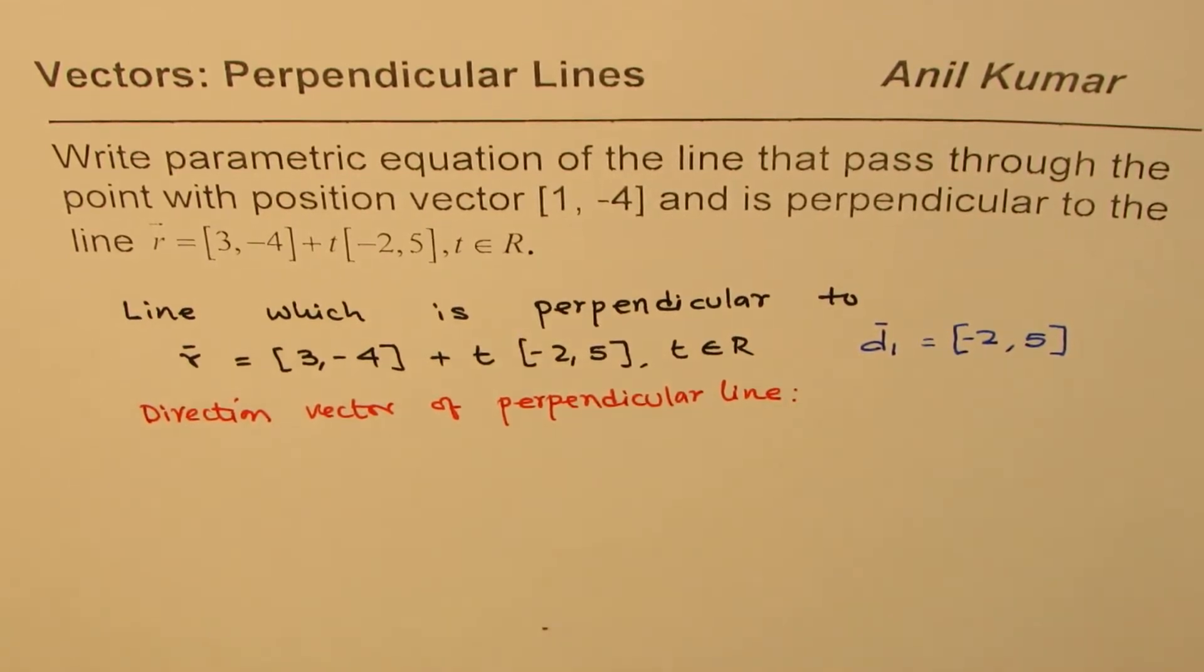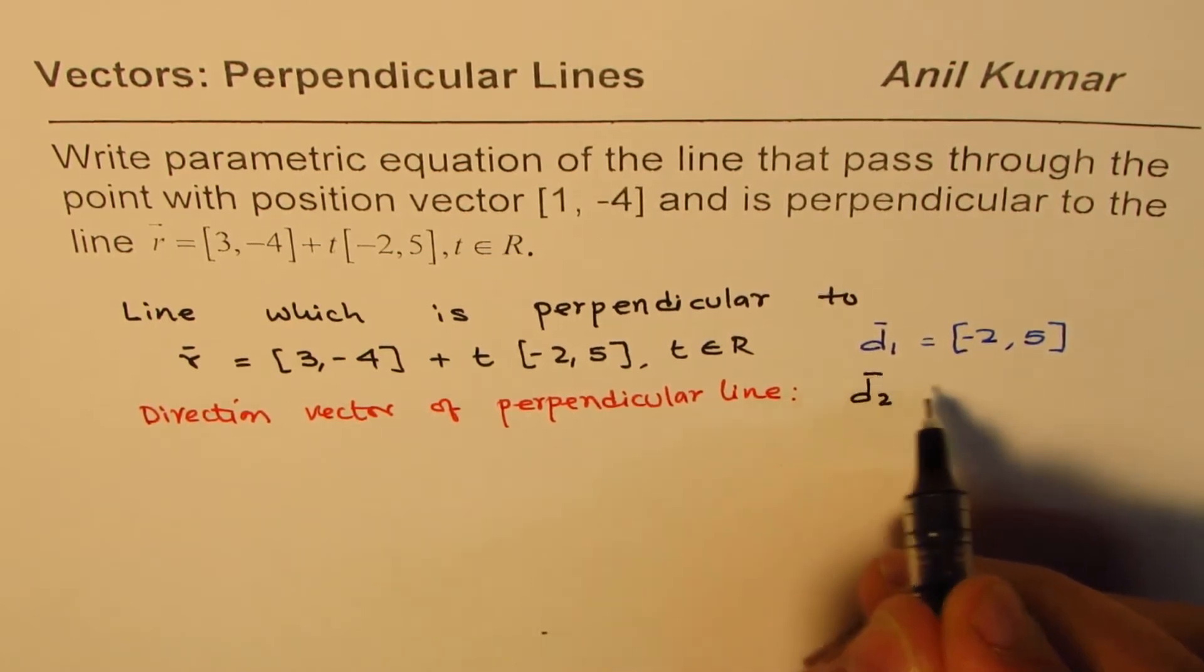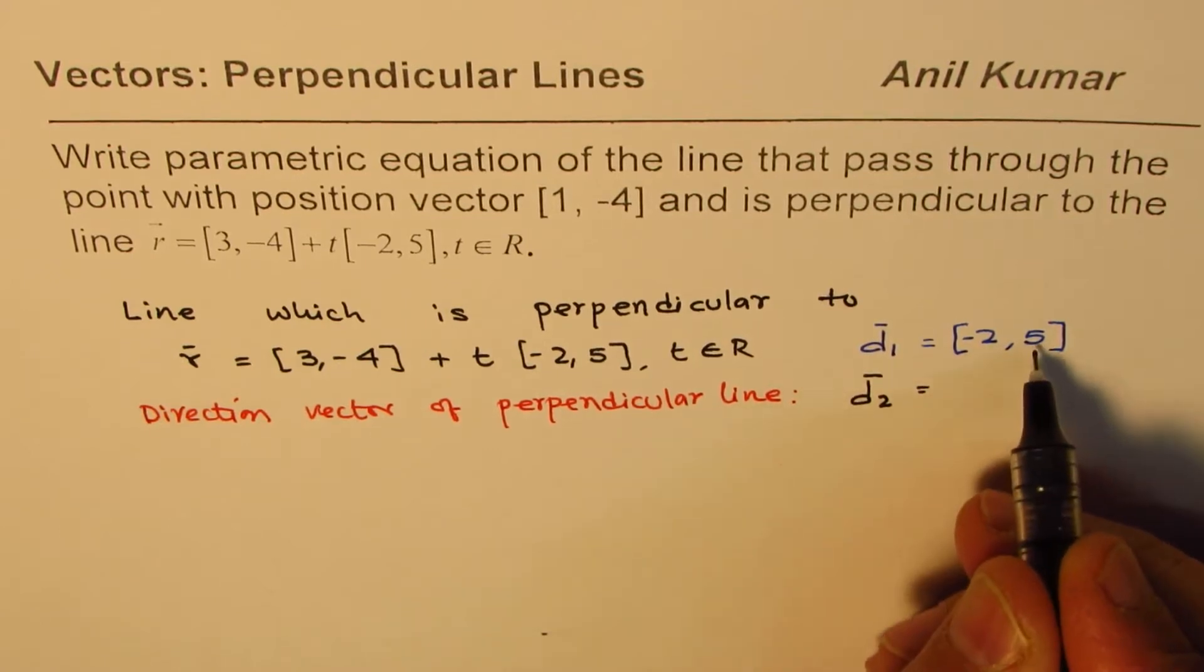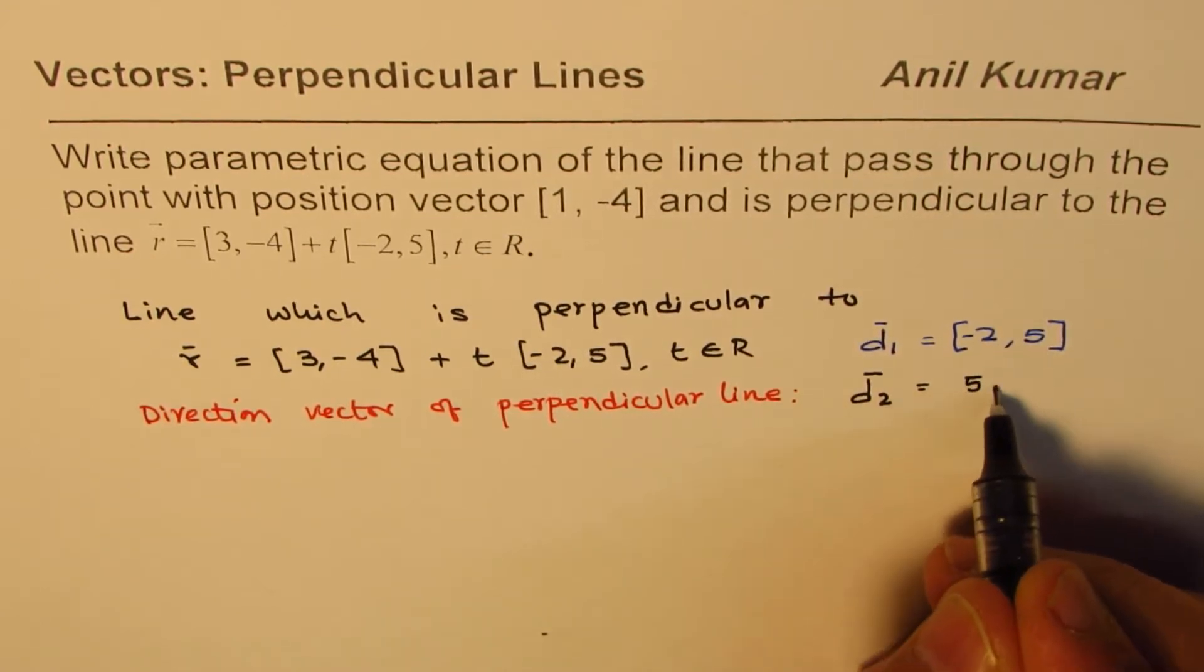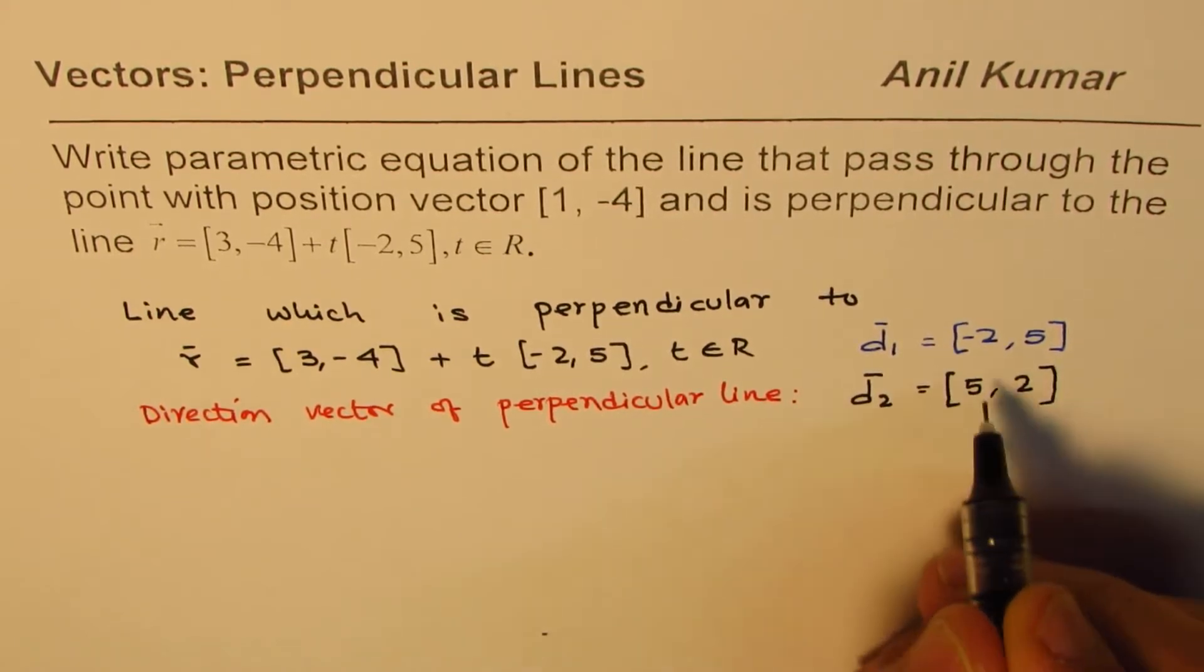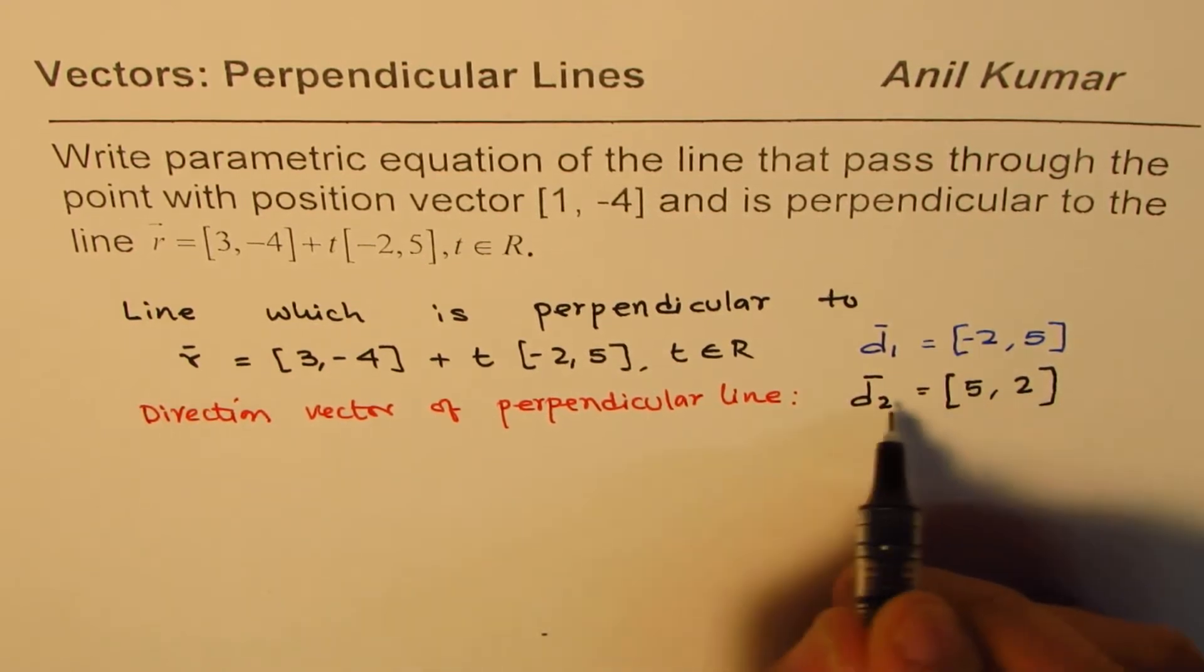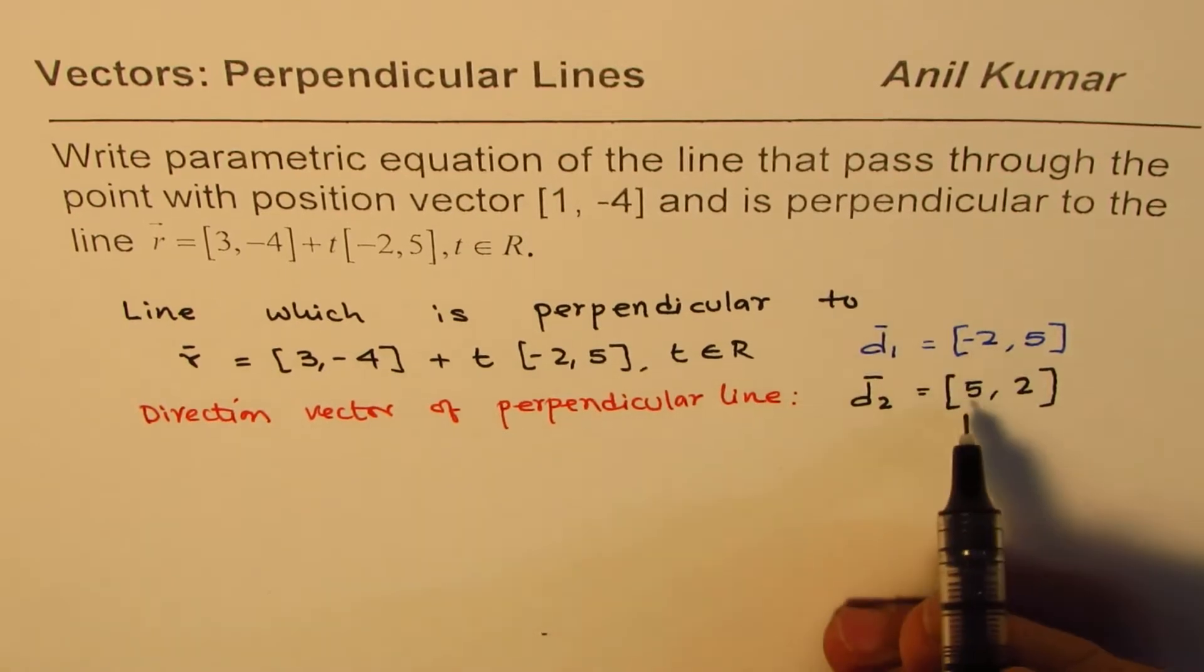Now, from the given direction vector, we can easily find it. Let me show you how: swap these two and change one of the signs. So instead of [-2, 5], I will write this as [5, 2] and I have changed one sign. Instead of minus, I made this as plus. So [5, 2] becomes direction vector for a perpendicular line.